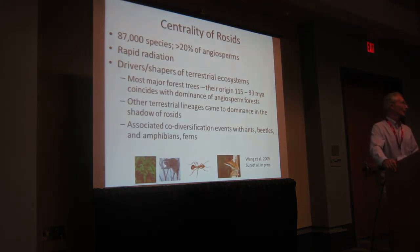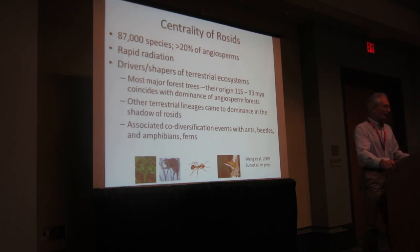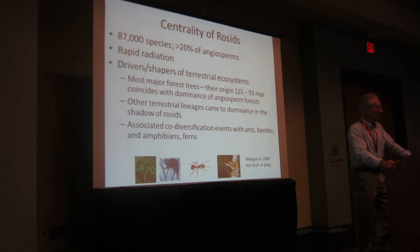Getting back to the rosids: they comprise about 20% of all angiosperms. This is a rapid radiation confirmed by earlier molecular studies and by recent studies that Meow has done — he'll tell you more on Wednesday. This clade is a major driver of terrestrial ecosystems. Most forest tree lineages — their origin and rapid radiation — coincides with the rise and dominance of angiosperm forests. Other terrestrial lineages then came to dominance in the shadow of the roses.